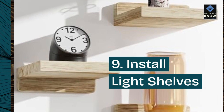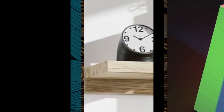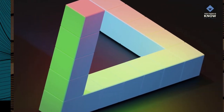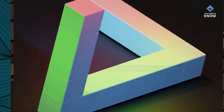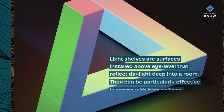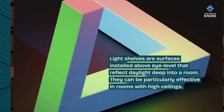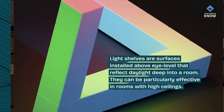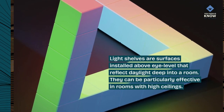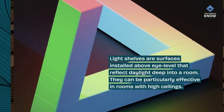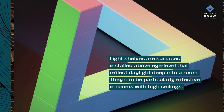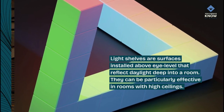9. Install light shelves. Light shelves are surfaces installed above eye level that reflect daylight deep into a room. They can be particularly effective in rooms with high ceilings.